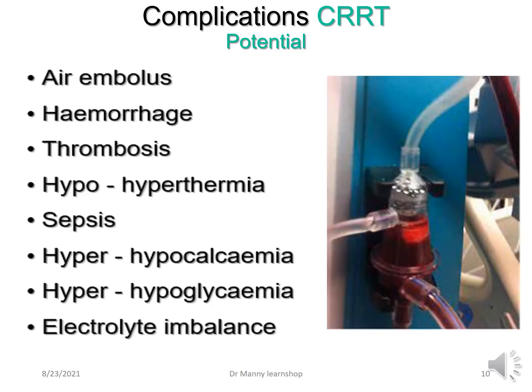What are some of the potential complications associated with CRRT? An air embolism — that's why most circuits have an air detector. Hemorrhage, especially if the patient is receiving anticoagulation. Thrombosis, because the circuit promotes an inflammatory response. Hypo- or hyperthermia. Sepsis. Hyper- or hypocalcemia. Hyper- or hypoglycemia. And there can be associated electrolyte imbalance — potassium, sodium, chloride, and magnesium.